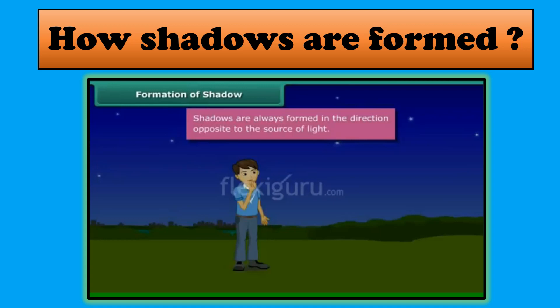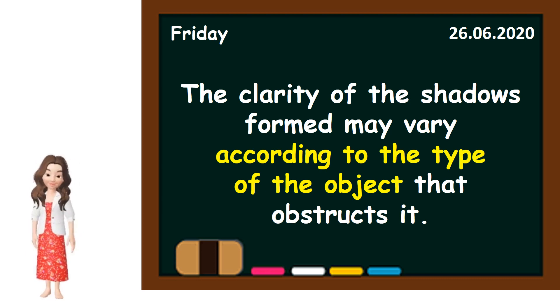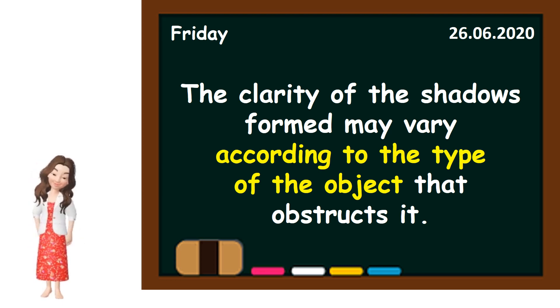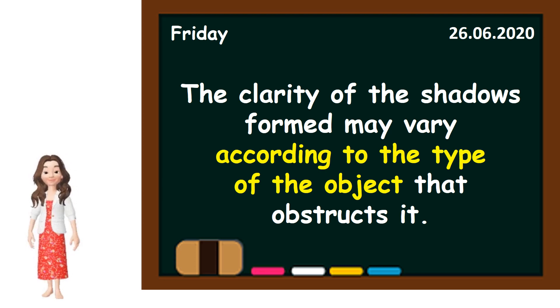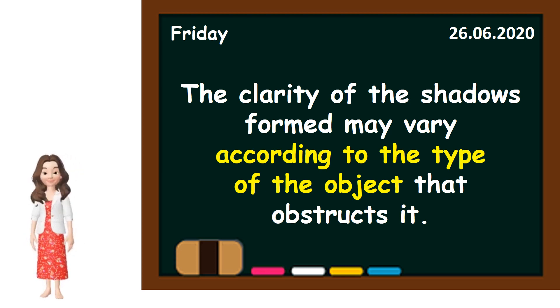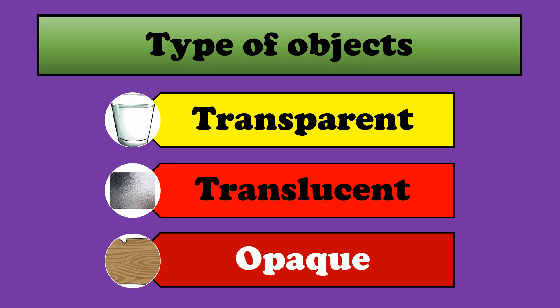When the sun sets, there was no light. Hence, there were no shadows. I hope now you have understood how a shadow is formed. A shadow is formed when moving light is obstructed by an object. The clarity of the shadows formed may vary according to the types of objects that obstruct it. There are three types of objects: transparent, translucent, and opaque.